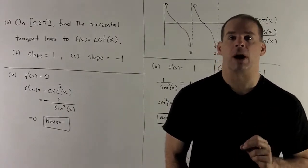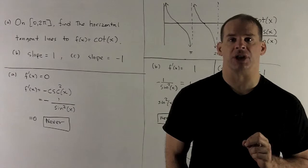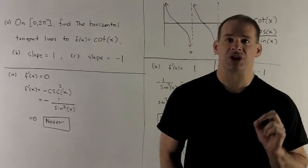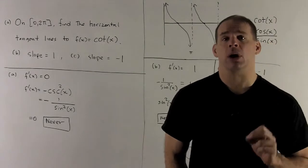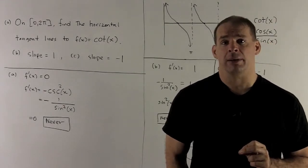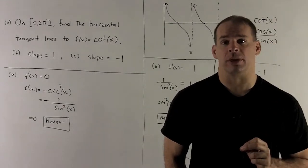So, for our first part, we're looking for horizontal tangent lines. A tangent line is going to be horizontal when its slope is equal to 0. And remember, we get the slope for a tangent line by using the derivative at the point that we're interested in.